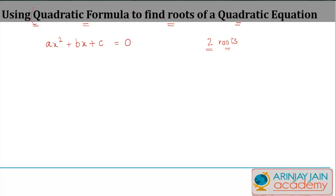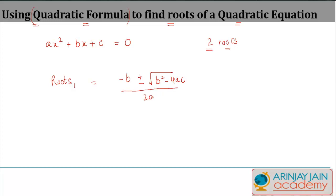The way you can find these two roots directly by using the quadratic formula is by applying this formula. The roots can be found by minus b plus or minus square root of b squared minus 4ac, divided by 2a, where a, b, and c are basically the values assigned in the standard form.